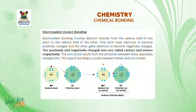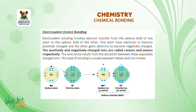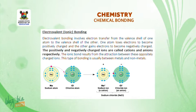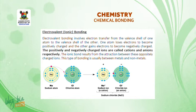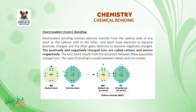Electrovalent bonding. Electrovalent bonding involves electron transfer from the valence shell of one atom to the valence shell of the other. One atom loses electrons to become positively charged and the other gains electrons to become negatively charged. The positively and negatively charged ions are called cations and anions respectively. The ionic bond results from the attraction between these oppositely charged ions. This type of bond is usually between metals and non-metals.